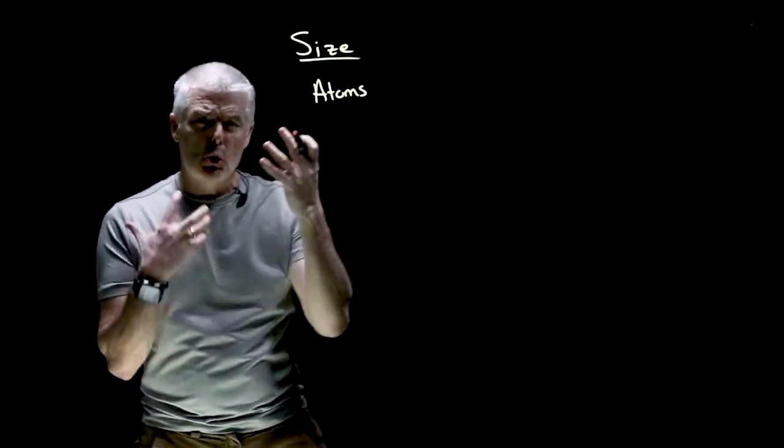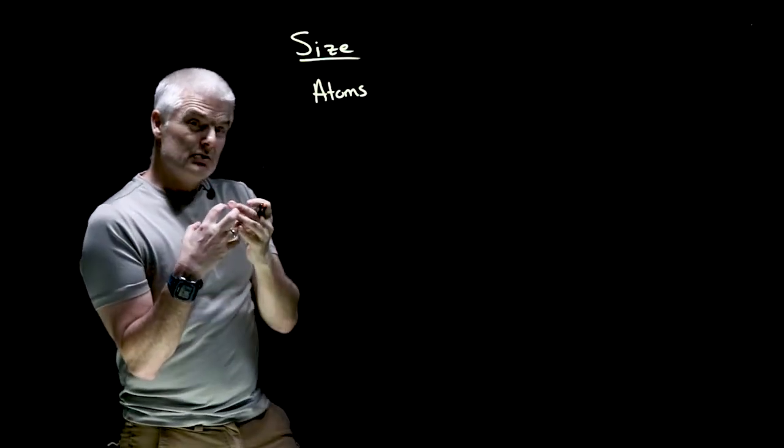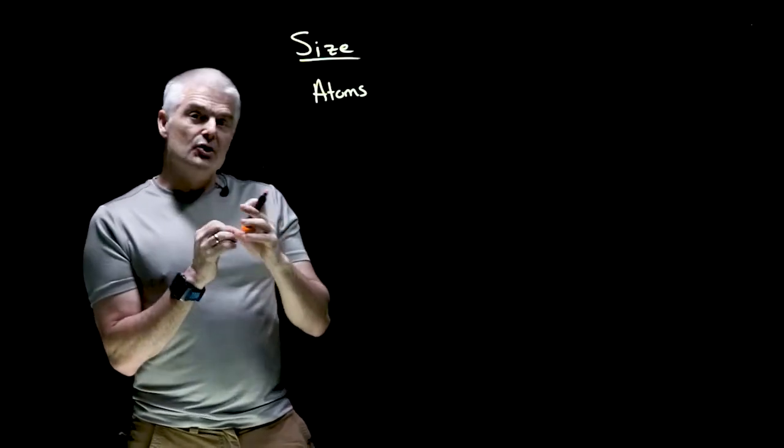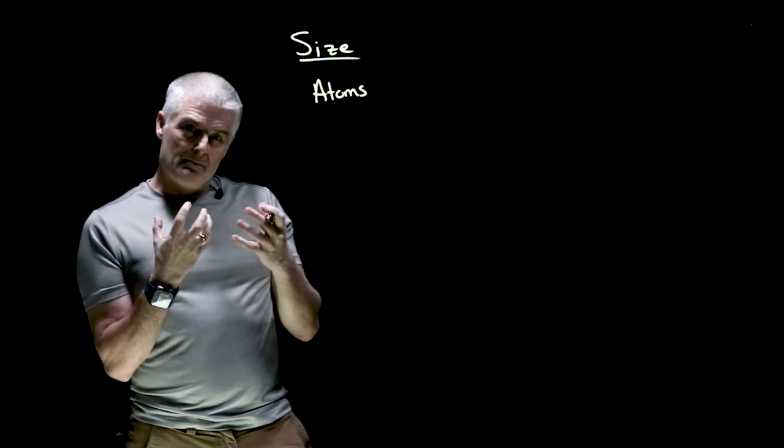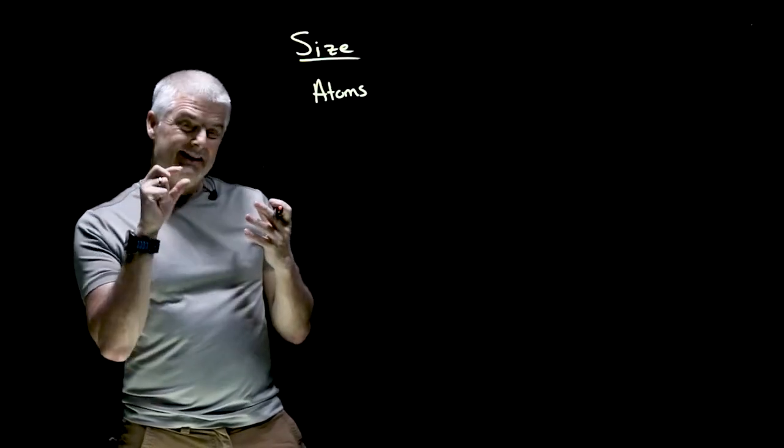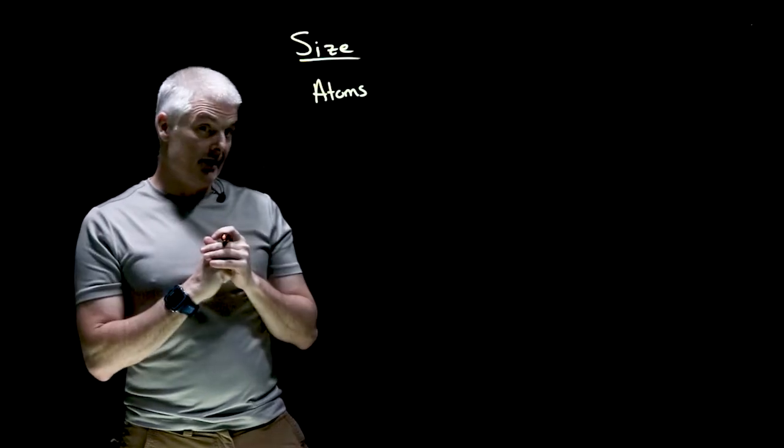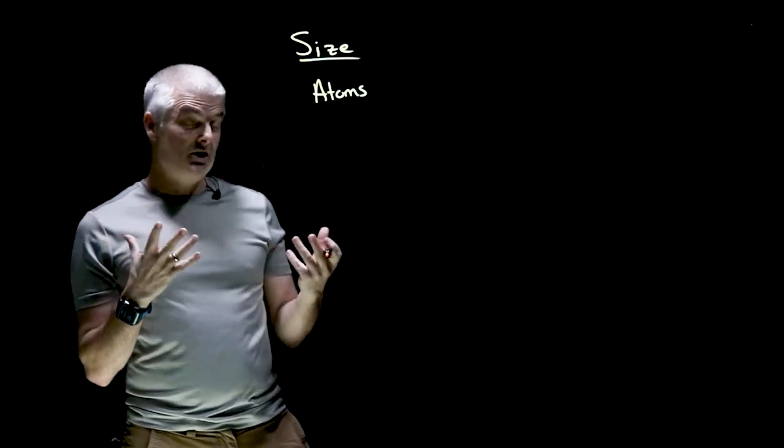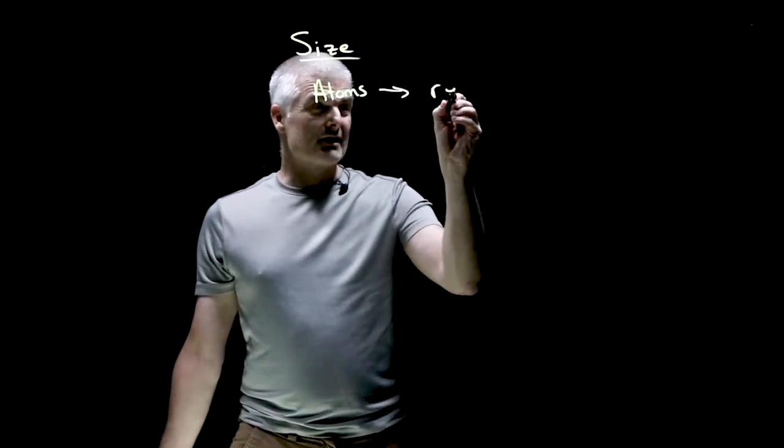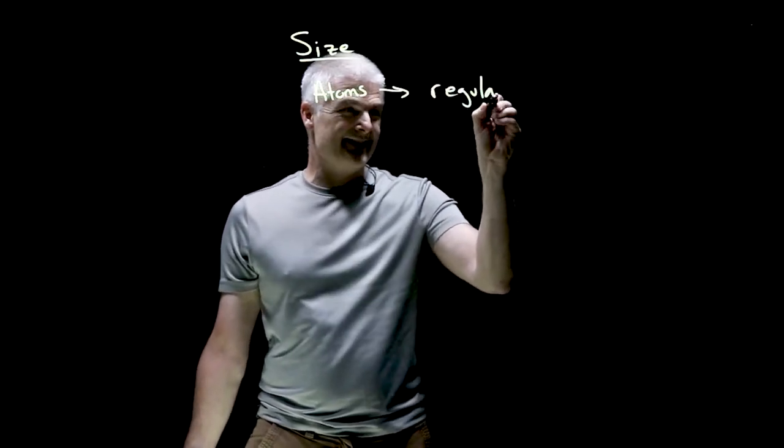Now, atoms are crazy, crazy small. Do you know if you ask the question, how many atoms are in an orange? You would have to blow the orange up to the size of, well, the earth. And each atom would be the size of a cherry. So imagine the number of cherries in the earth. That's the number of atoms in an orange. So from atoms to regular-sized objects, you know, like an orange, right?